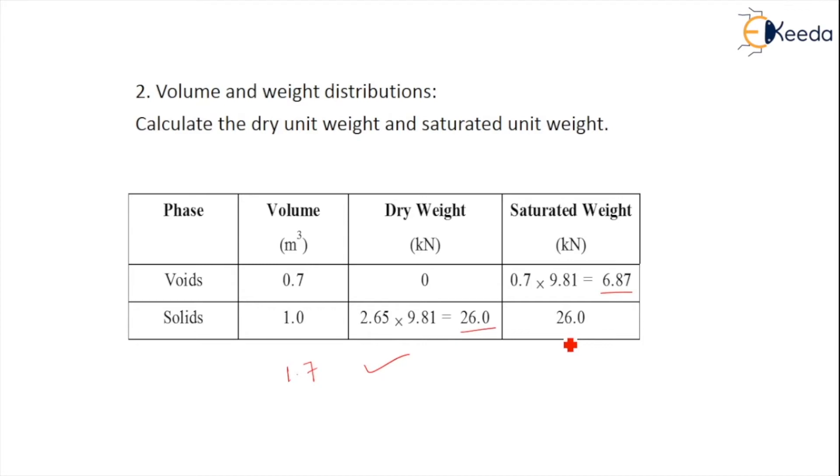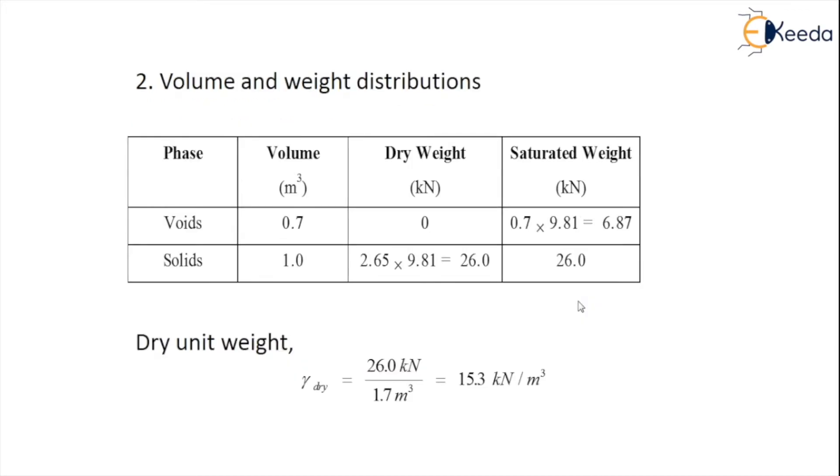We know the dry unit weight gamma dry or gamma d is equal to the dry weight of the solids to the total volume. So dry weight of the solids is given as 26, total volume is given as 1.7, so 1 plus 0.7. After calculation we get it as 15.3 kilonewtons per meter cube.